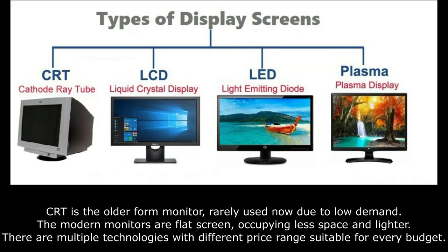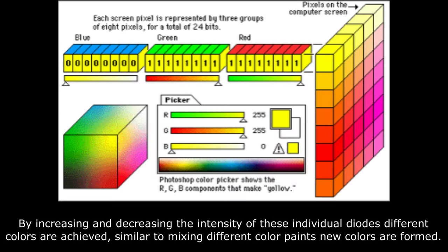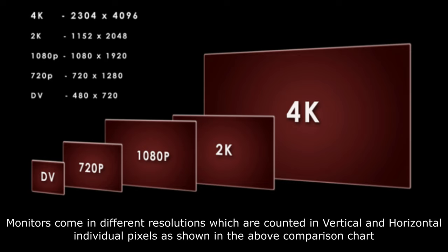CRT is the older form of monitor, rarely used now due to low demand. The modern monitors are flat screen, occupying less space and lighter. There are multiple technologies with different price ranges suitable for every budget. Monitor screens work on the principle of pixels placed vertically and horizontally. Each pixel is made of three color diodes — red, green, blue. By increasing and decreasing the intensity of these individual diodes, different colors are achieved. Each diode can have 8, 10, or 12-bit variations multiplied by three diodes, which can produce billions of color shades. Monitors come in different resolutions counted in vertical and horizontal individual pixels.